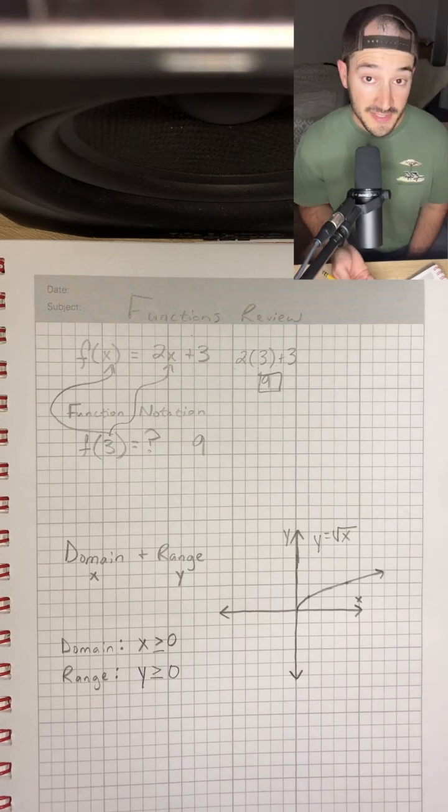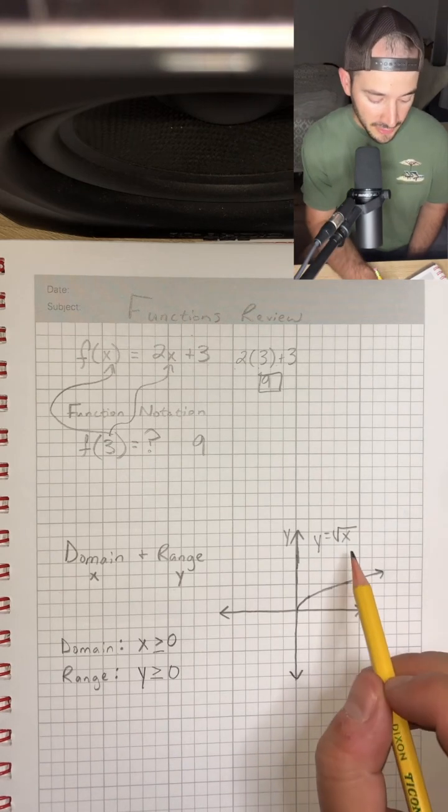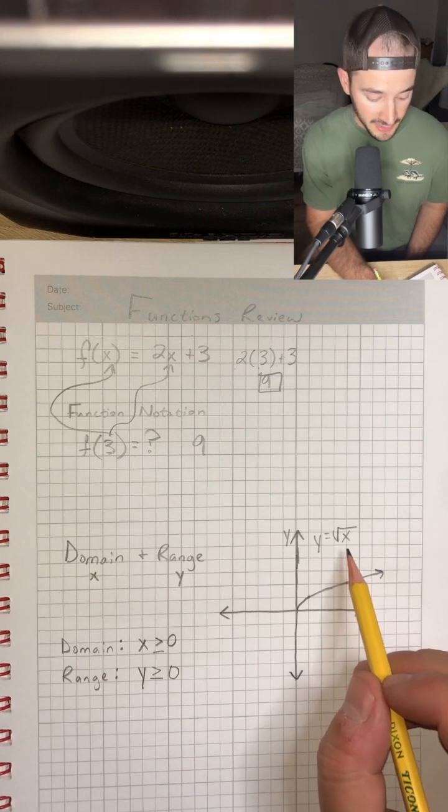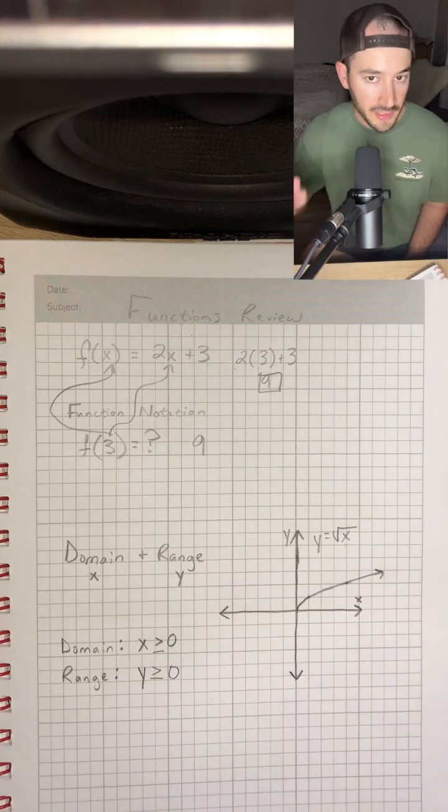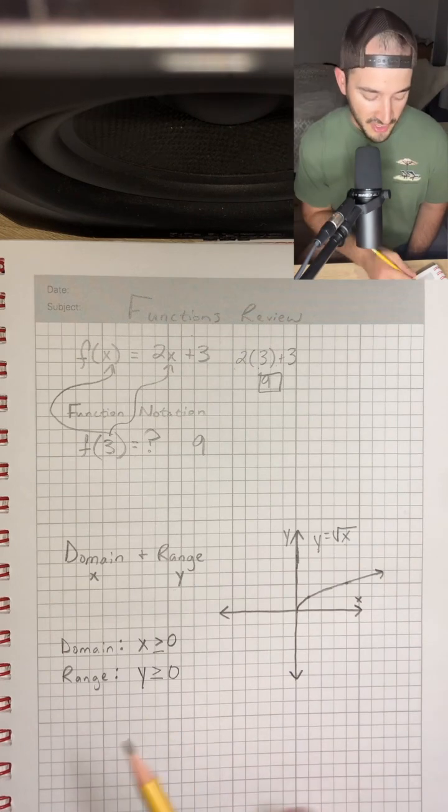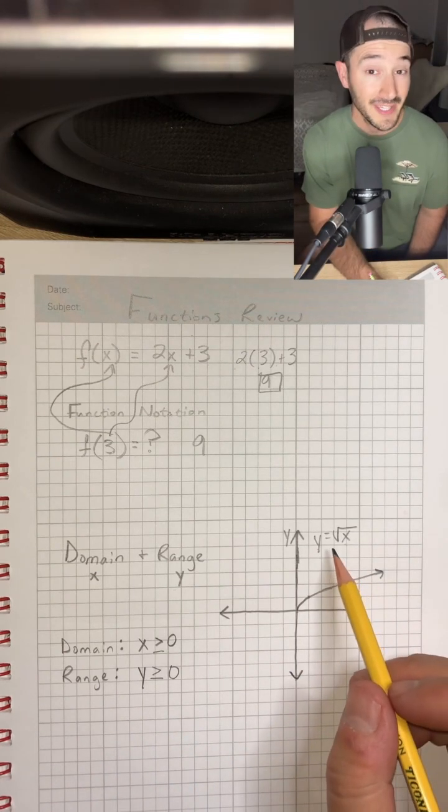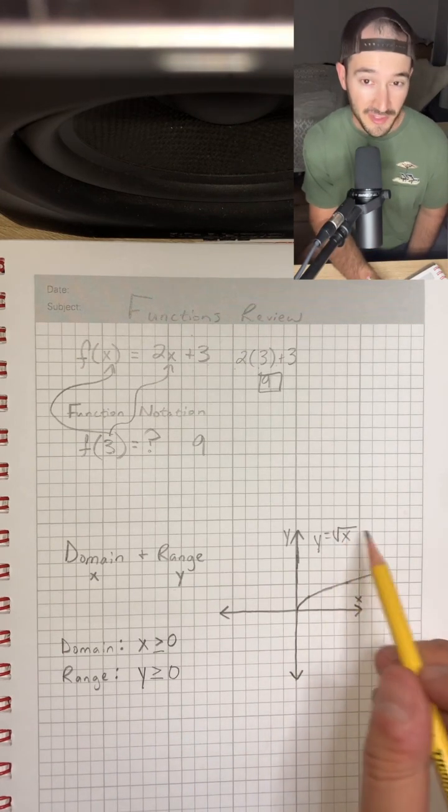And once again, that makes sense, because we already said we can't plug negatives into this x value. If we plug in 0, we'll get 0. If we plug in 1, we'll get 1, so you're only going to get bigger and bigger from there. So that makes sense. No matter what we plug in, we can't get a negative value whenever we're taking the square root.